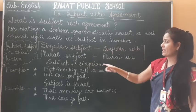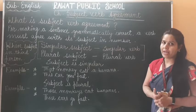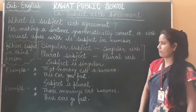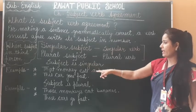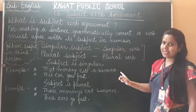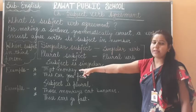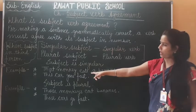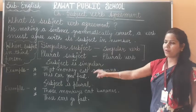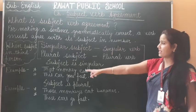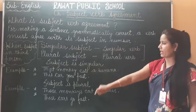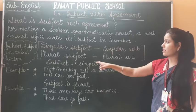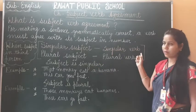When the subject is singular, we write a singular verb. Example: 'That monkey eats a banana' — 'that monkey' is singular subject and 'eats' is singular verb. Another example: 'This car goes fast' — 'this car' is singular subject and 'goes' is singular verb.